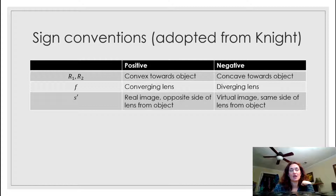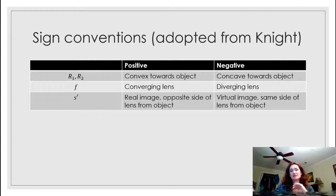S prime is the distance from the image to the center of the lens. S is the distance from the center of the lens to the object. S is always positive, but S prime can be either positive or negative. S prime is positive if it's a real image, which means it's on the opposite side of the lens from the object. S prime is negative if it's a virtual image, and virtual images are on the same side of the lens as the object.